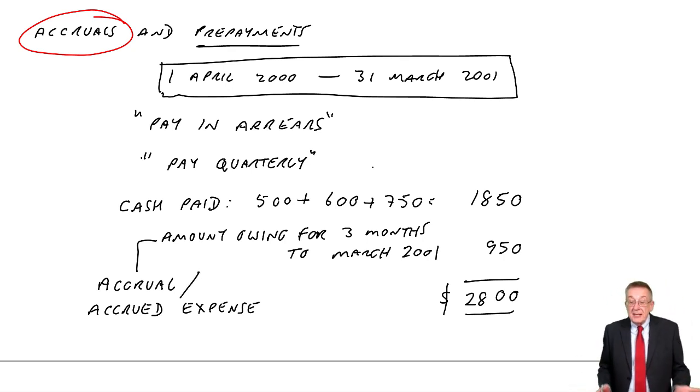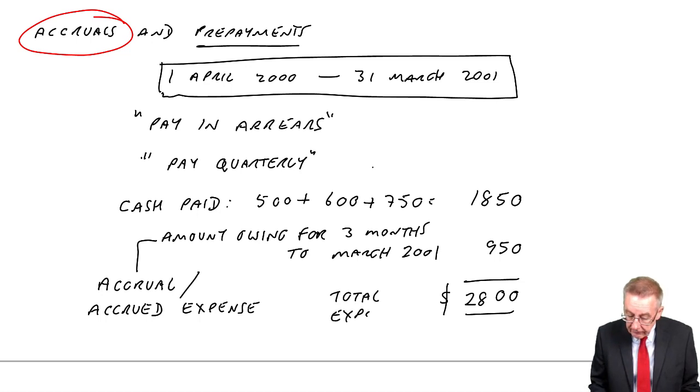It's an accrual or an accrued expense. It's the amount owing at the end of the period. And so that 2,800, that is the total expense for the year. And it will appear in the statement of profit or loss.